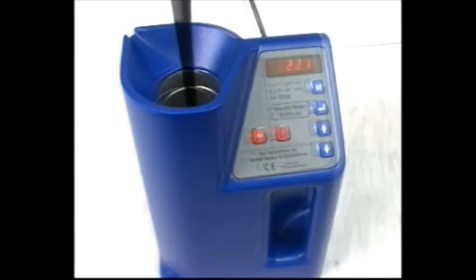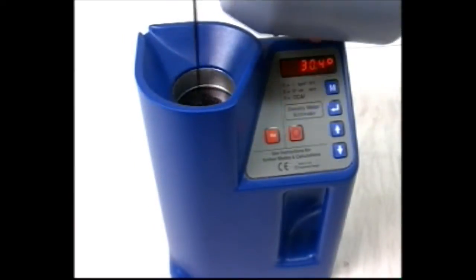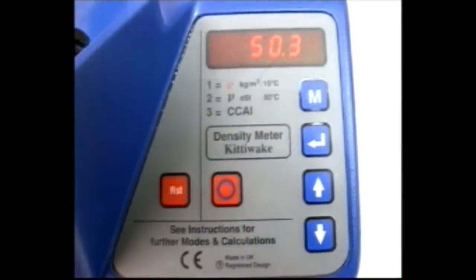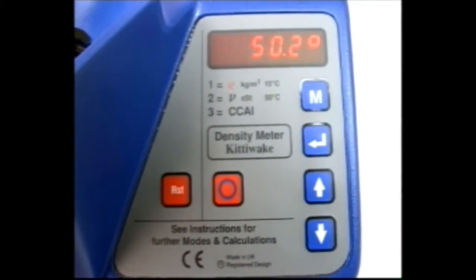The centigrade digit flashes during heating. Stir the oil occasionally with the stirring rod until it has reached 50 degrees Celsius. This will take about 10 minutes.